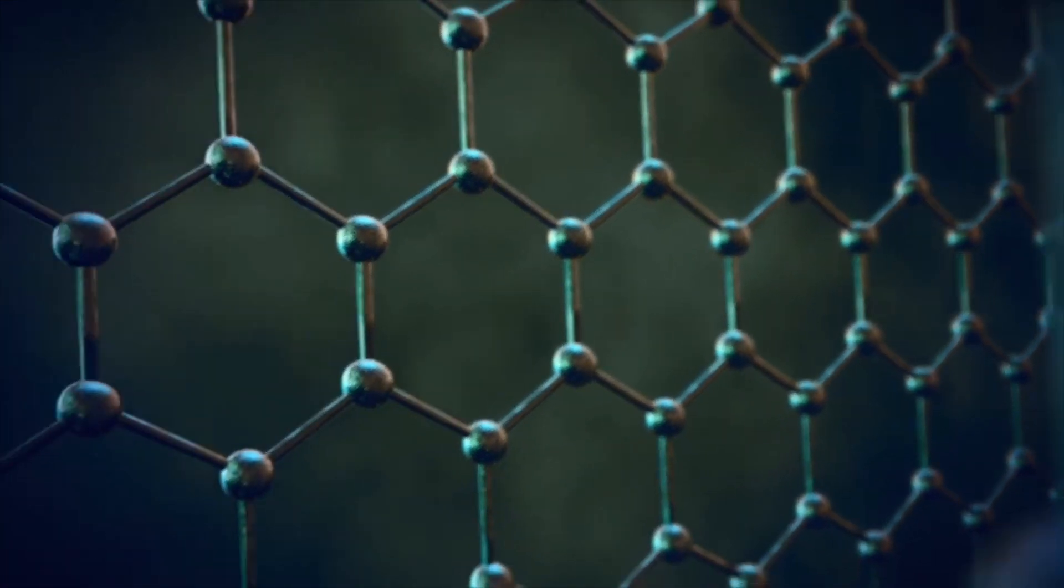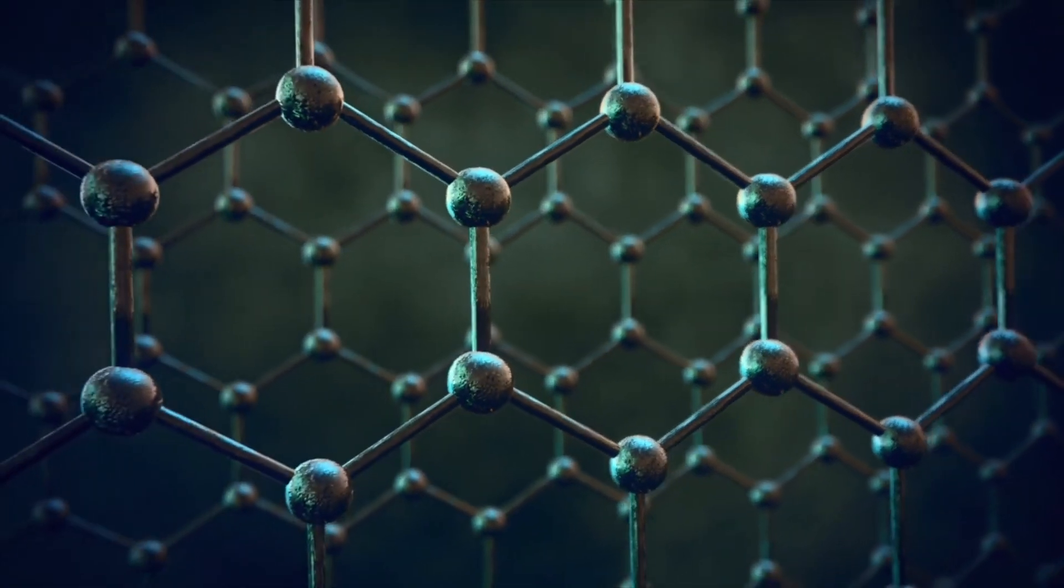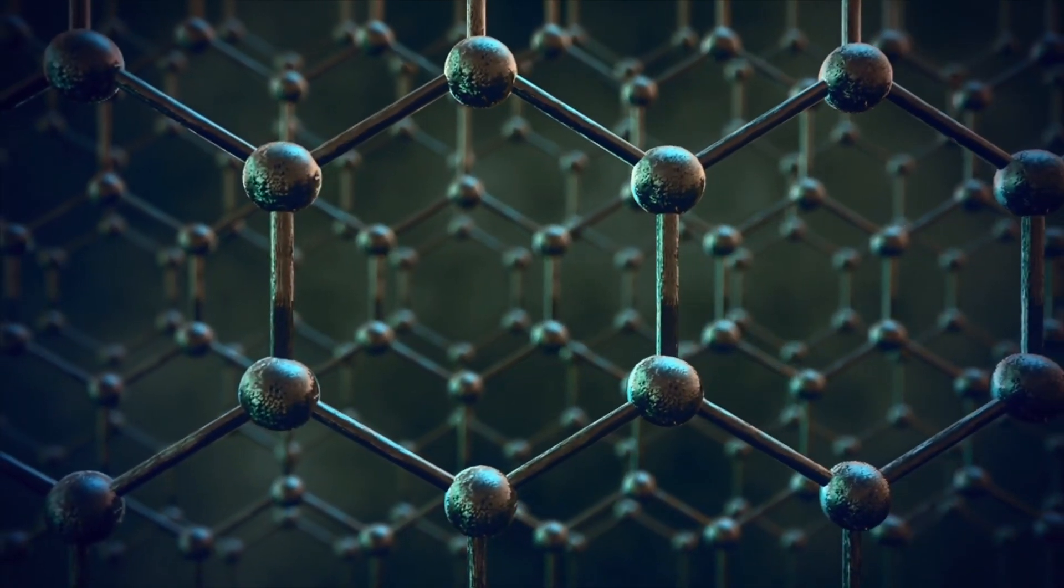Because graphene is atomically flat, water is able to pass over its surface without experiencing any friction. This enables highly efficient membranes to be produced, where the permeability is increased. In addition, by stacking these graphene flakes on top of each other, it's possible to tune the spacing between them. And this is the basis of the selectivity of the membrane.